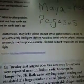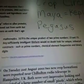With mathematics, 1679 is a unique product of two prime numbers, 23 and 73. Any sufficiently intelligent life form would no doubt look for unique universal constructs such as prime numbers, chemical elements, frequencies, and binary digits. That's what their equation is for a crop circle. This is from the website cropcircleresearch.com. Take a look at their website — they've got a lot of cool stuff, and that's where I got some of the information here.